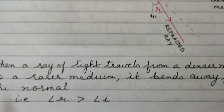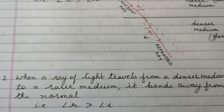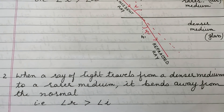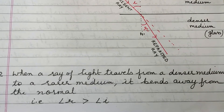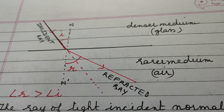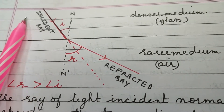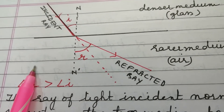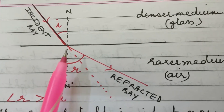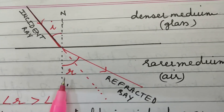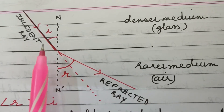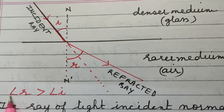The second point: if a ray of light travels from a denser medium to a rarer medium, it bends away from the normal, meaning the angle of refraction will be greater than the angle of incidence. We can explain this with a diagram. This is the glass medium, which is a denser medium, and this is the air medium, which is a rarer medium. When the ray of light is incident on the surface of separation, instead of going straight, the ray moves away from the normal. Therefore, the angle of refraction is greater than the angle of incidence.